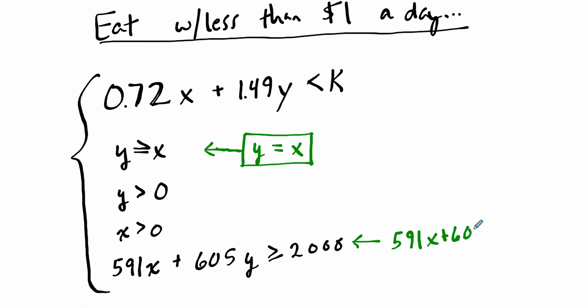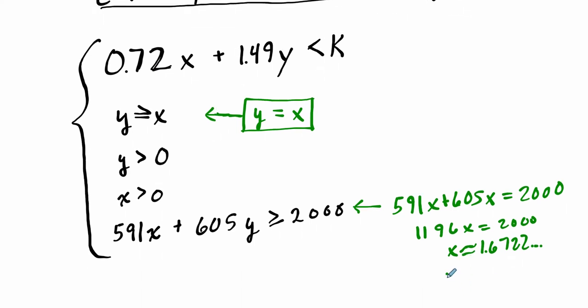And say it equals 2,000. We're just going to find out when these, if this were an equation, and this were an equation, when they would meet. And that would be 1196 times x equals 2,000. If you divide both sides by 1196, you get an answer: about 1.6722 pounds of, in that case, rice. But it's also true for the beans. So we need about 1.6722 pounds of rice and beans in order to get 2,000 calories. That will work for us.